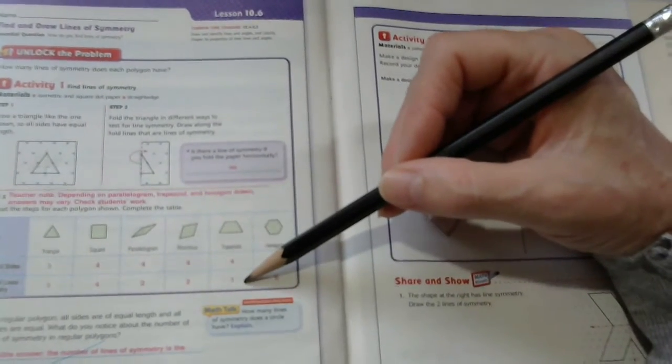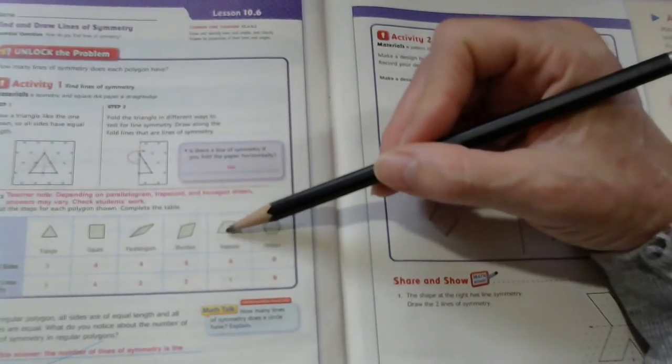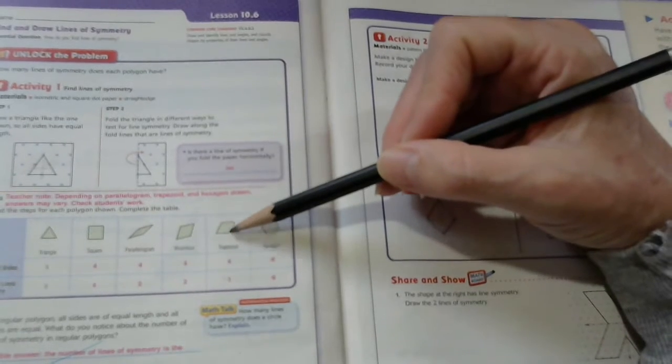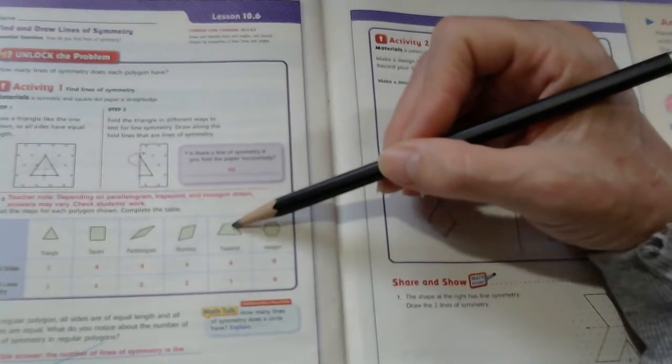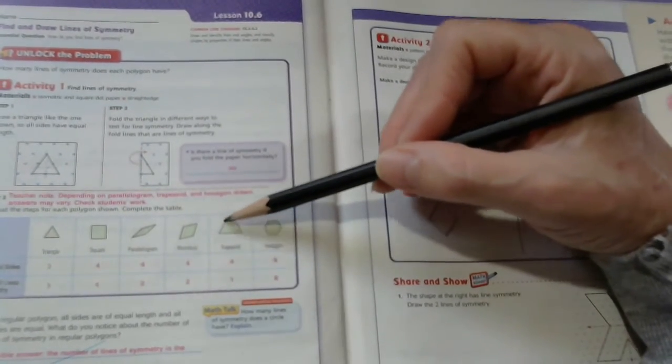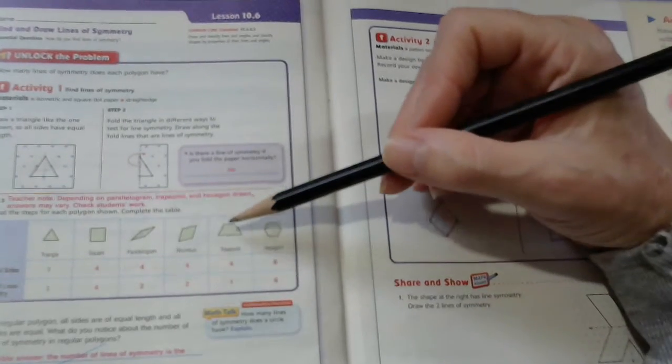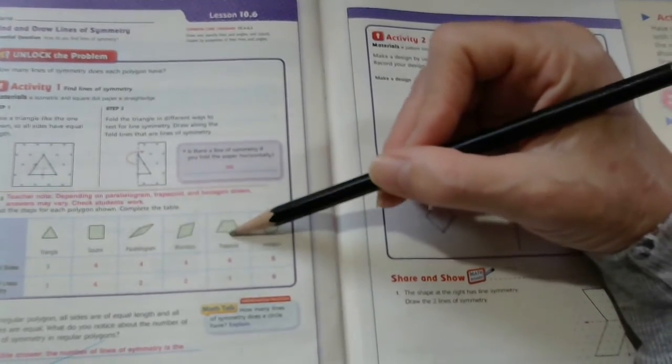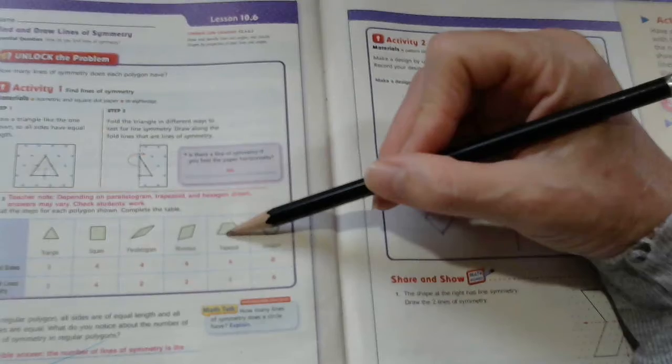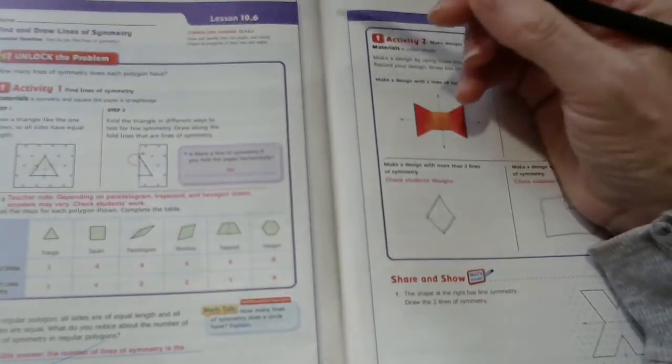Now, a trapezoid has four sides, but only one line of symmetry, and that's because these two particular sides are not the same length. These are, but these are not. So, it cuts out that extra line of symmetry. So, your only line of symmetry is going to be a vertical line up and down.